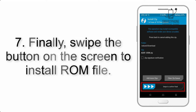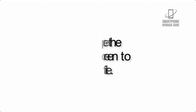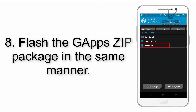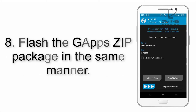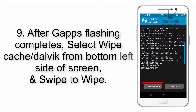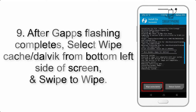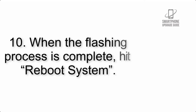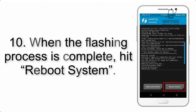Step 7: Swipe the button on the screen to install the ROM file. Step 8: Flash the G apps zip package in the same manner. Step 9: After G apps flashing completes, select Wipe Cache and Dalvik from the bottom left side of the screen and swipe to wipe.